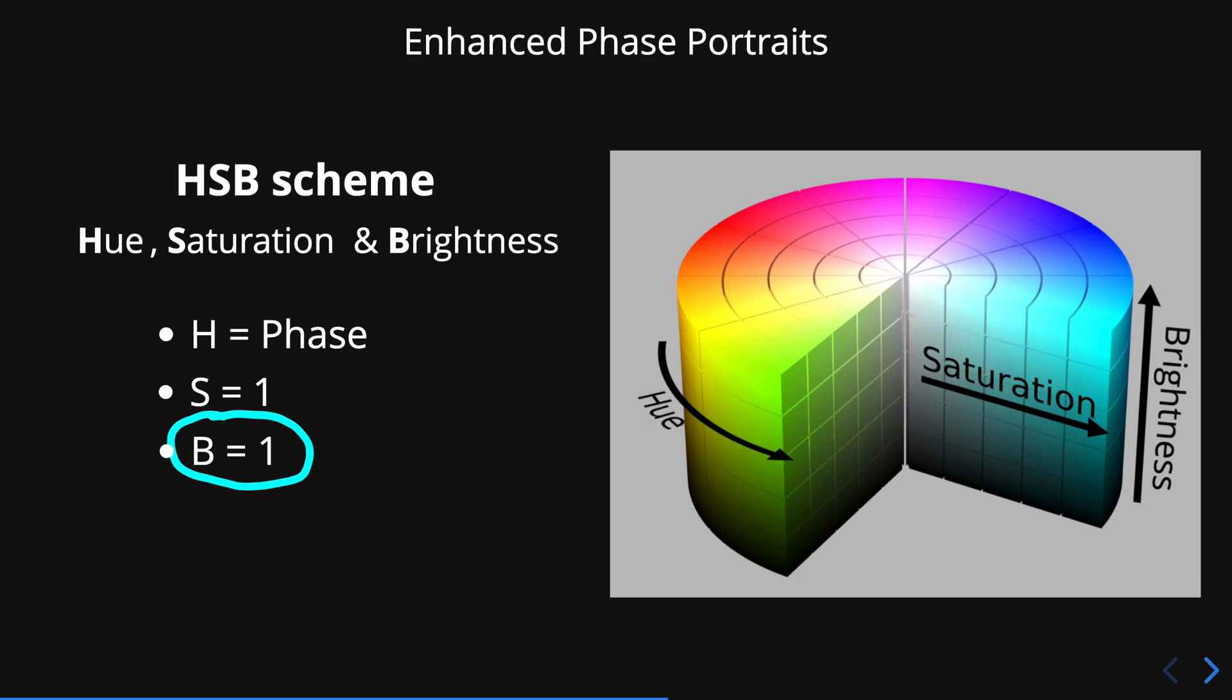Let's just modify the value of the brightness. Instead of 1, we introduce this function, which contains the required information to plot the level curves of the modulus of the function, logarithmically spaced.